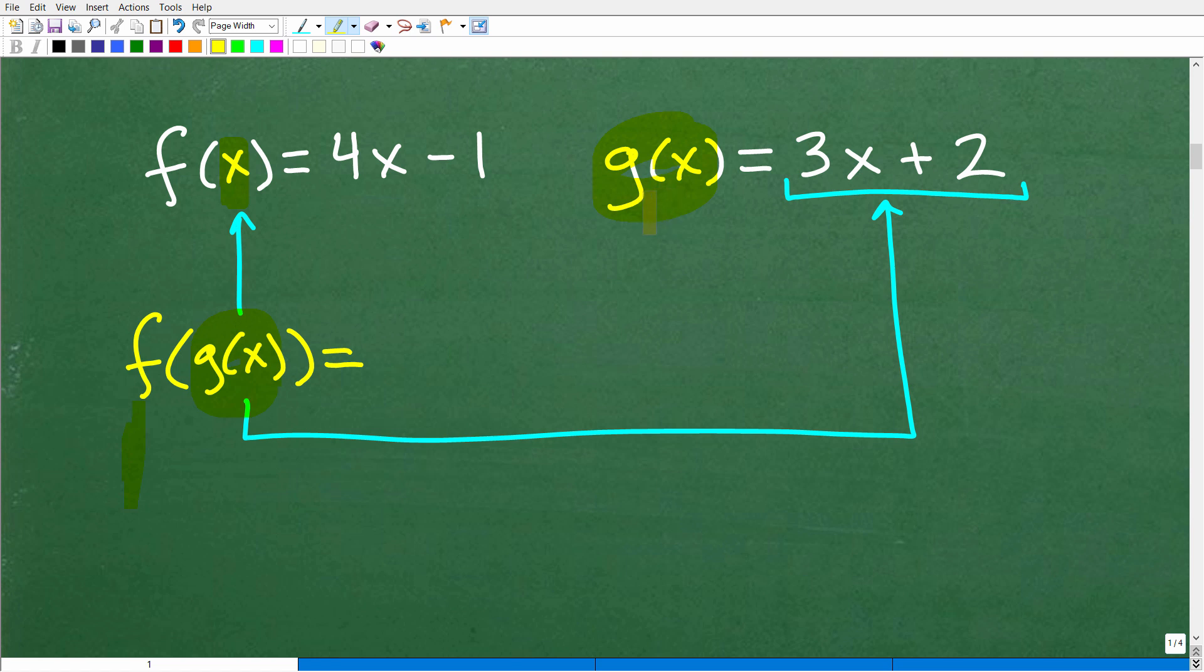Now, the g(x) function, this is the name of it, but the actual function is 3x plus 2. So what we're going to be doing here is we're going to replace this x with g(x), but it's not going to be the g(x) like this. It's going to be what it's equal to, 3x plus 2. All right, so if that makes sense, let's go ahead and take the next step and see how this works.